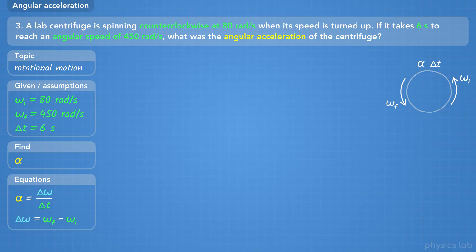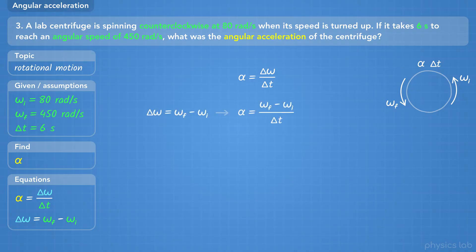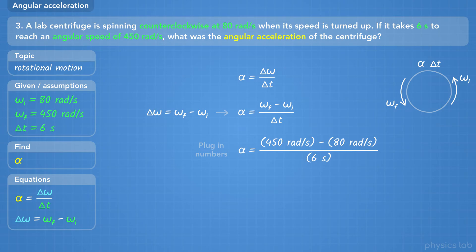The change in angular velocity, delta omega, equals the final angular velocity minus the initial angular velocity. Starting with the first equation, we replace delta omega with omega final minus omega initial. Alpha is already isolated on the left. Now we plug in the values and find that the angular acceleration is equal to 61.67 radians per second squared.